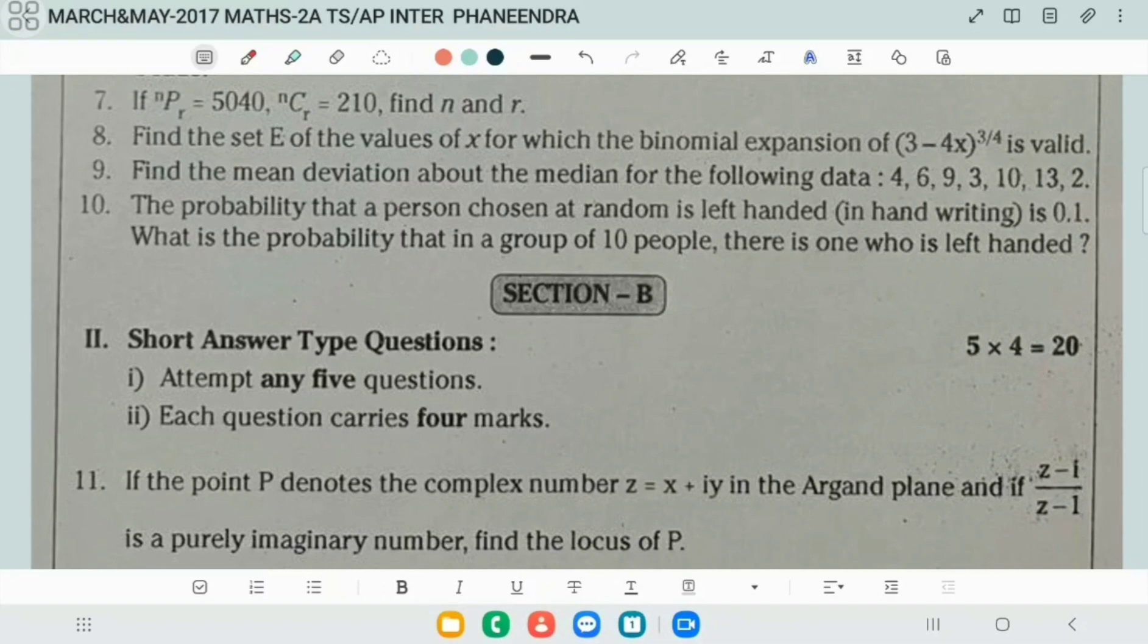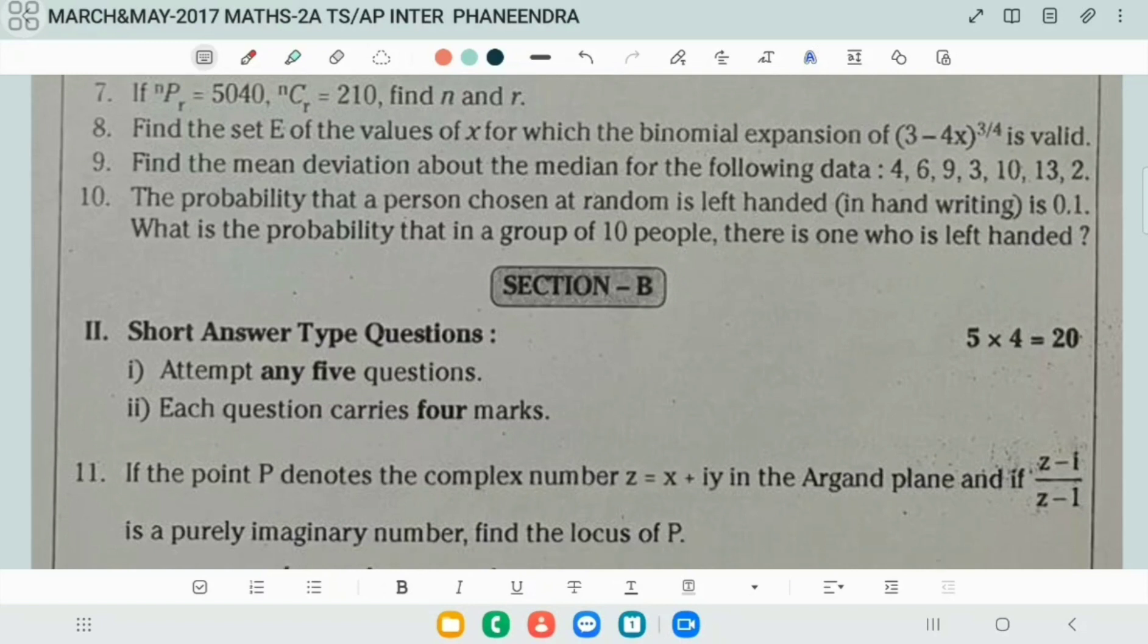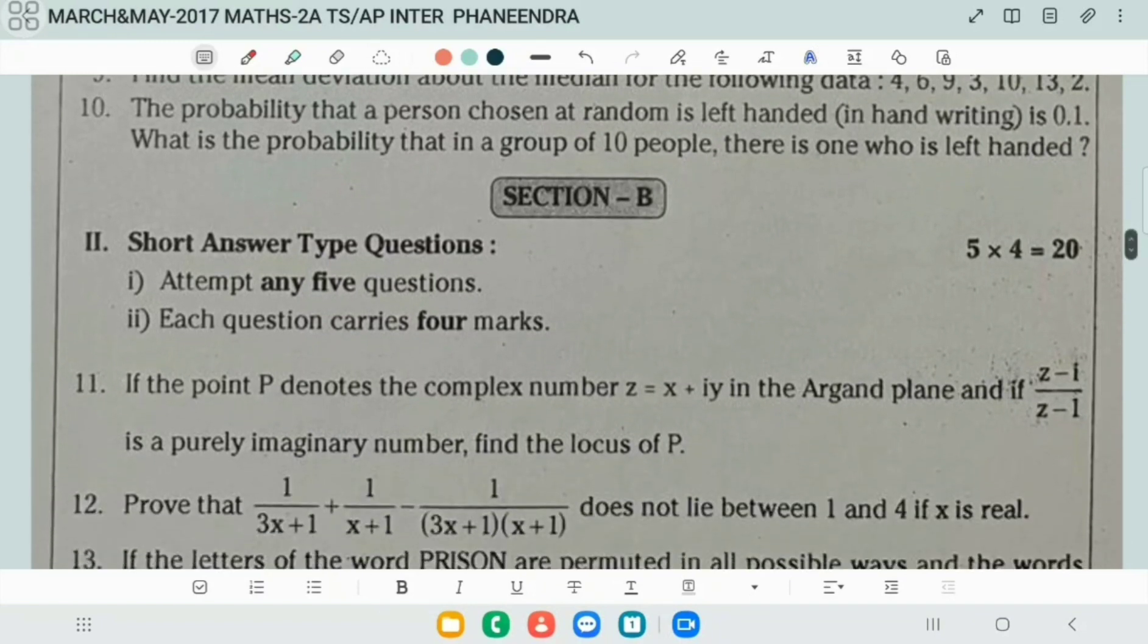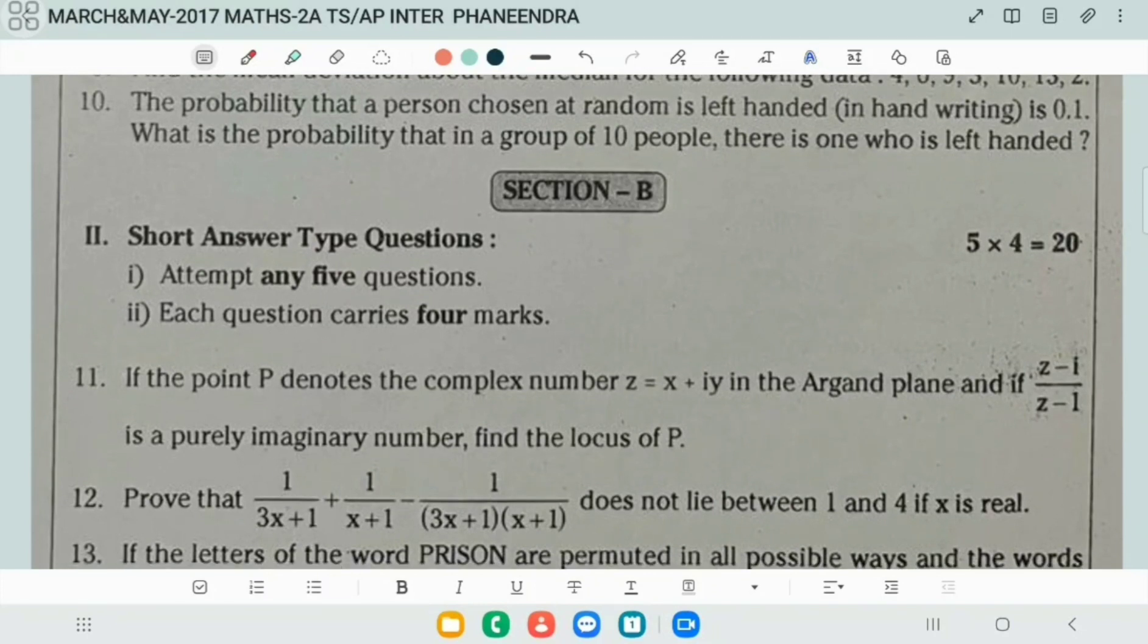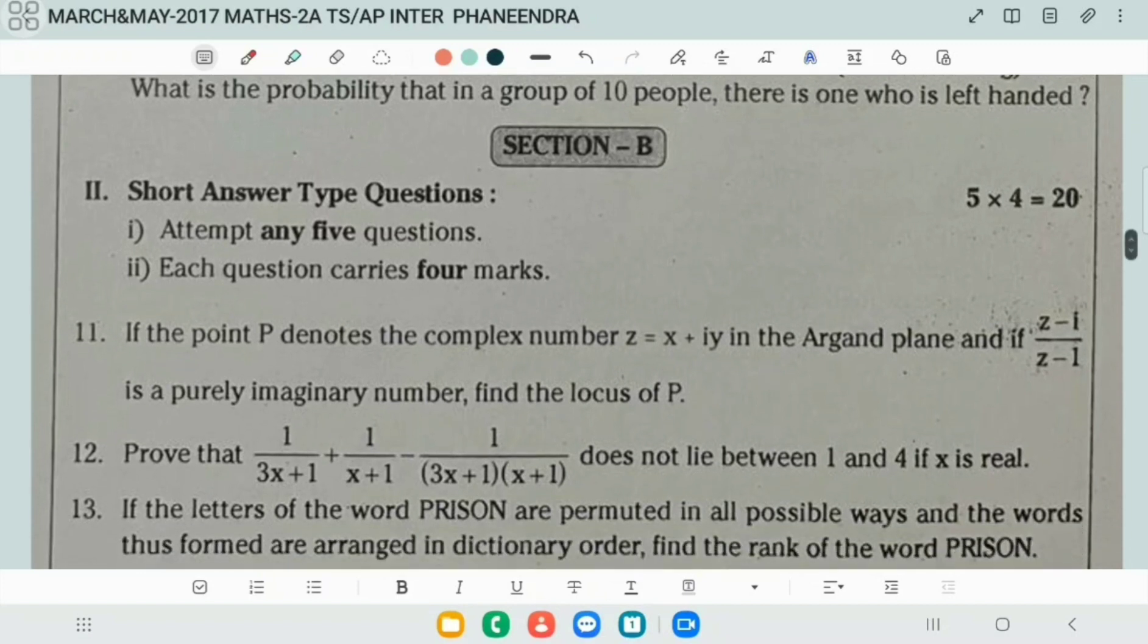Next, binomial expansion, binomial theorem question. Find the mean deviation over the median for the following data. The probability that a person chosen at random is left-handed. This you can use any method, either Poisson distribution or binomial distribution. Better to do binomial distribution, it will come easily.